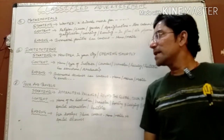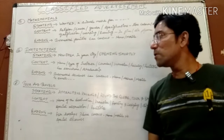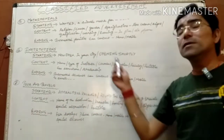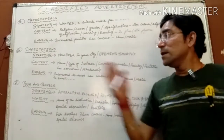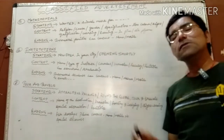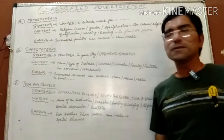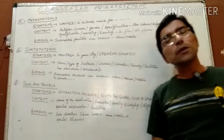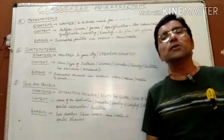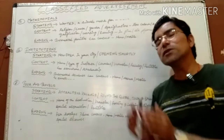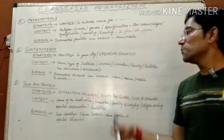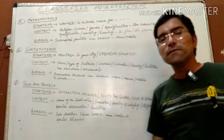Now let's move on to the next category: institutions. To start an institution advertisement, we have two options: 'Now open in your city' or 'Opening shortly.' The difference is that 'Now open in your city' means the institution is currently running and operational, while 'Opening shortly' is used when the institution is about to open.